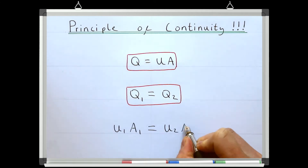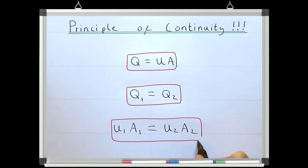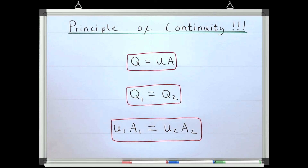We could also say U1A1 equals U2A2. This is called the principle of continuity, and it's an absolutely central concept in hydraulics. It's important to note that velocity and area do not have to be the same between two points — they can both vary — but the discharge must be the same between two points, and thus the product of the velocity and the area must be the same.